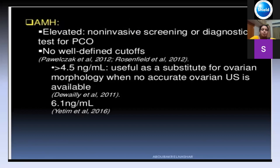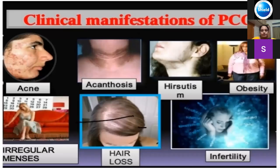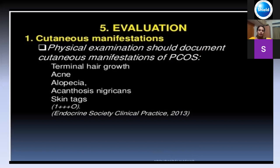AMH is under diagnostic criteria, but in adolescents you don't need to get it done for everyone. AMH values are raised in cases of PCOS and greater than 4.5 is taken as the cut-off. Clinical presentations include acne, acanthosis nigricans, hirsutism, and hair loss, which can lead to infertility further.